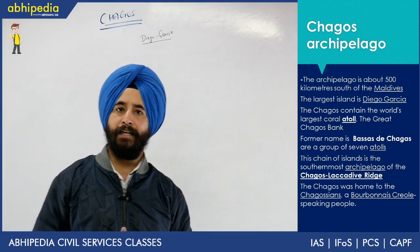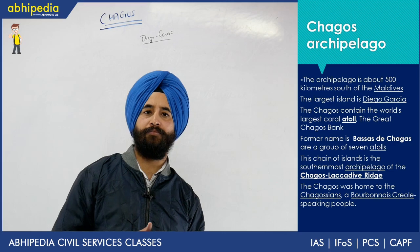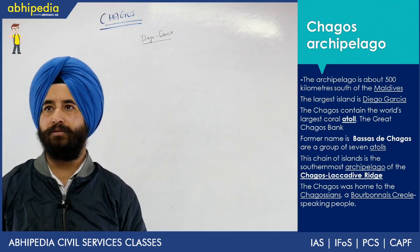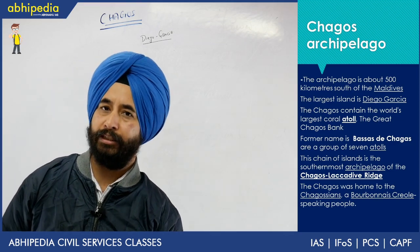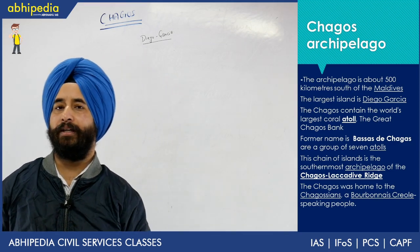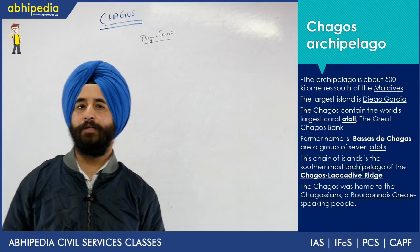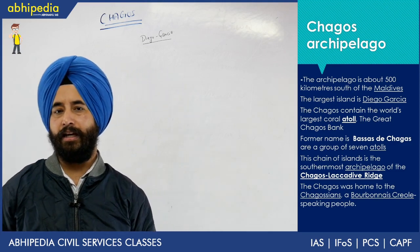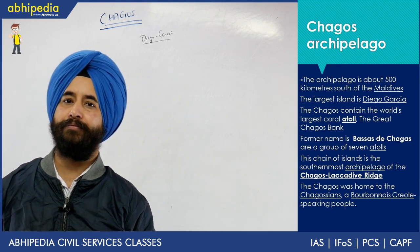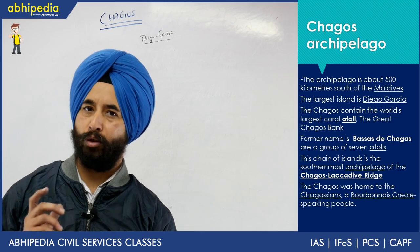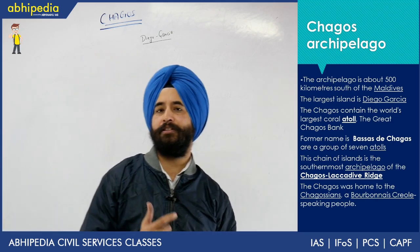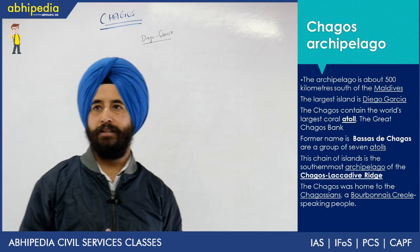Today we are going to cover a new island with the name of Chagos Archipelago. This is in the Indian Ocean. This is a dispute between Mauritius and Britain. This is a very interesting and very relevant island — we will understand why.